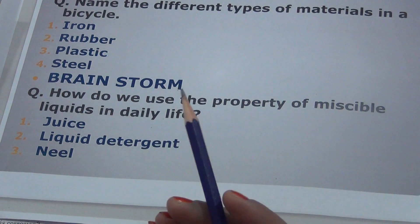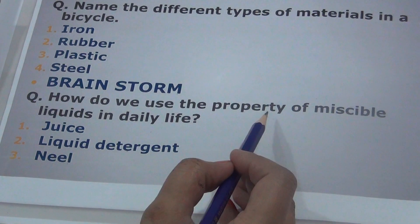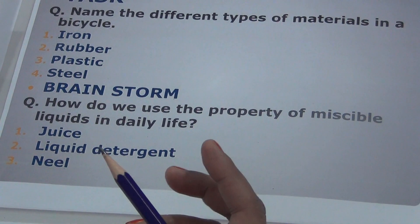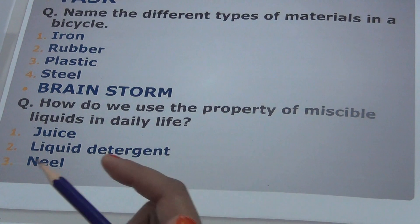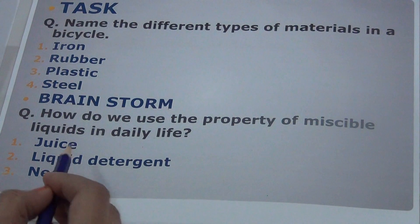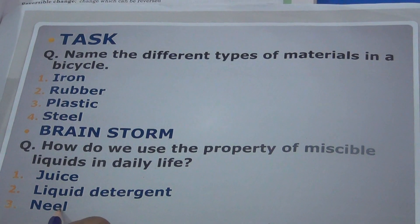Brainstorm. This is also an activity. How do we use the property of miscible liquids in daily life? In our daily life, we use liquids that are mixed. These are called miscible liquids. Juice, liquid detergent, and nail polish.